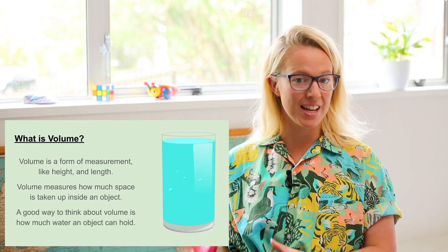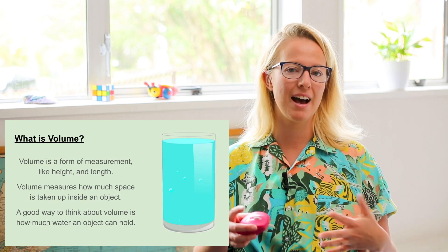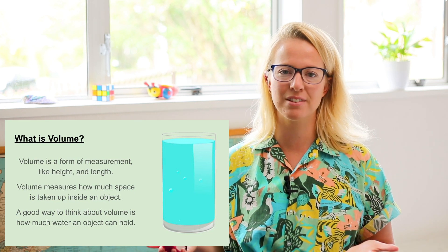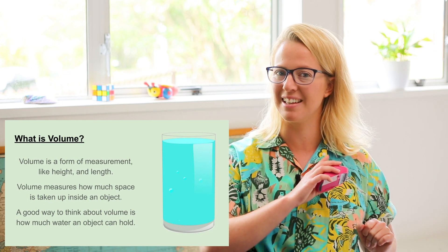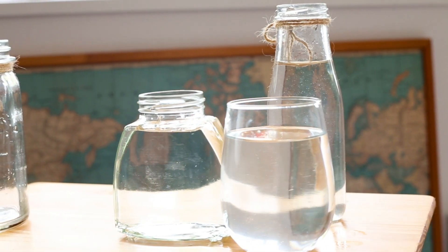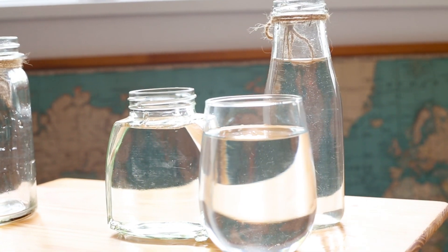So let's look at three different vessels — cups, vases, different jars that I have in the house — to see what the volume of those vessels are. I have three vessels in front of me and we're going to check the volume by seeing how much water each vessel can hold. We've got a tall skinny one, a short wider one, and a shorter rounded one.